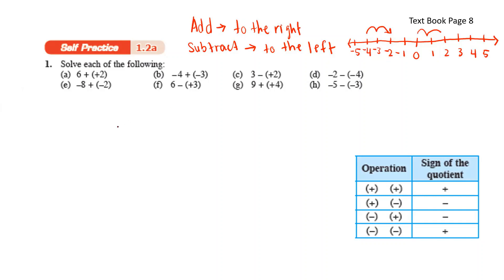Now let's take a look. 6 plus positive 2 — positive and positive, as you can see in the table, you get a positive sign. So you get 6 plus 2, which is 8.